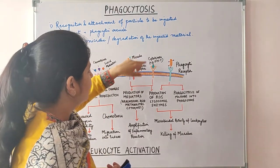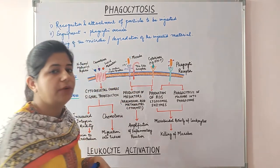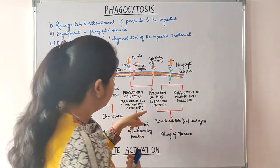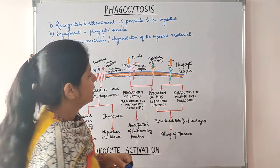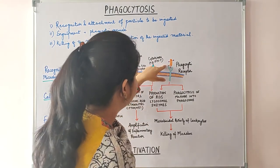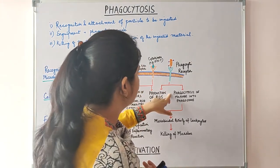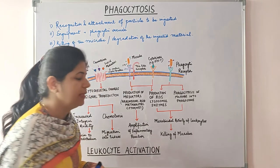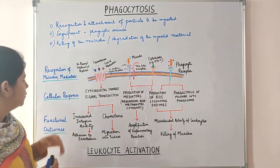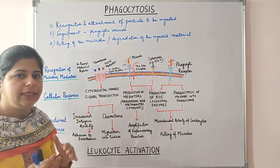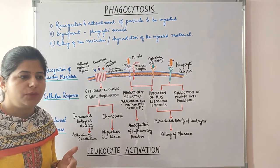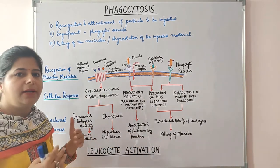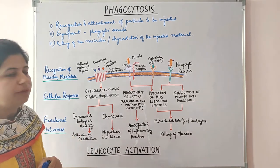Certain cytokines, like interferon gamma, lead to production of reactive oxygen species and lysosomal enzymes, which are released in the phagolysosome, contributing to microbicidal activity. When phagocytic receptors are engaged by the microbe or microbial products, this leads to phagocytosis into the phagosome, ultimately leading to killing of the microbes. All these cellular responses are integrated and contribute to the ultimate goal of inflammation — to get rid of the offending agent.